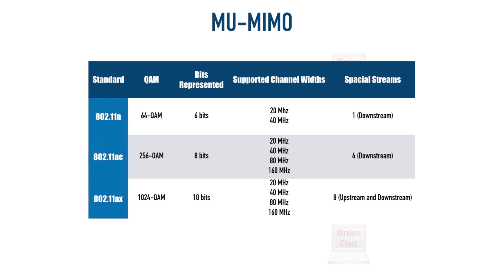.11n can only send one spatial stream at a time. .11ac can do four — but here's the catch: if it's sending traffic out to four devices, that's downstream only. .11ac is not able to receive traffic from four devices simultaneously. That's a huge improvement with .11ax — here we can have eight spatial streams, both upstream and downstream, upload and download at the same time. It's like going from half duplex to full duplex.